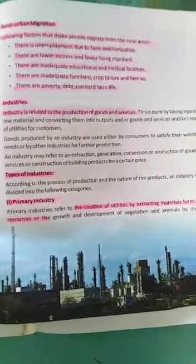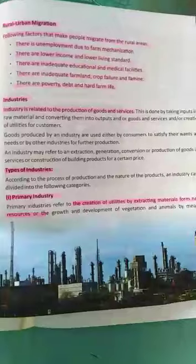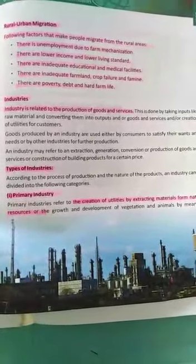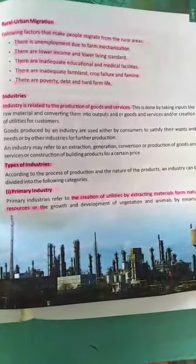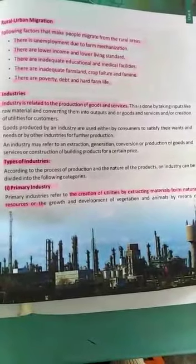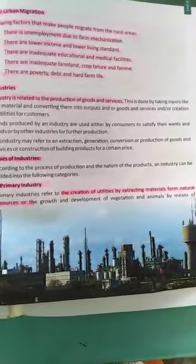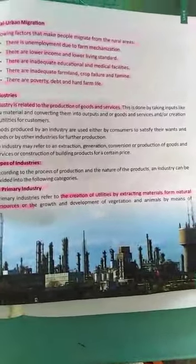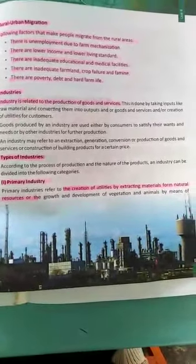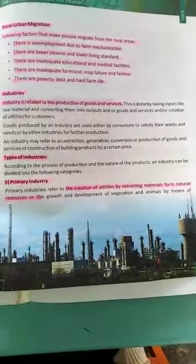On the same page you can see the topic of industry. Industry is the production of goods and services. There are types of industry. The first type is primary industry. Primary industry refers to the creation of utilities by extracting materials from natural resources, or the growth and development of vegetation and animals.